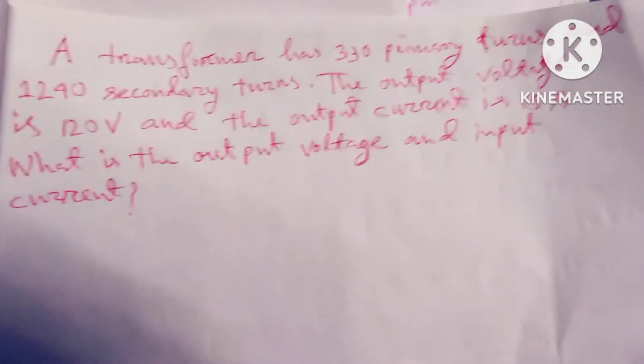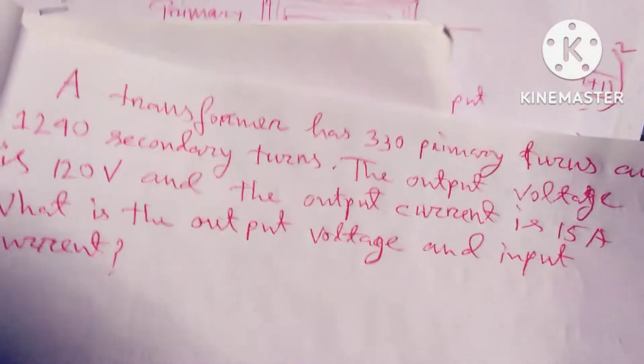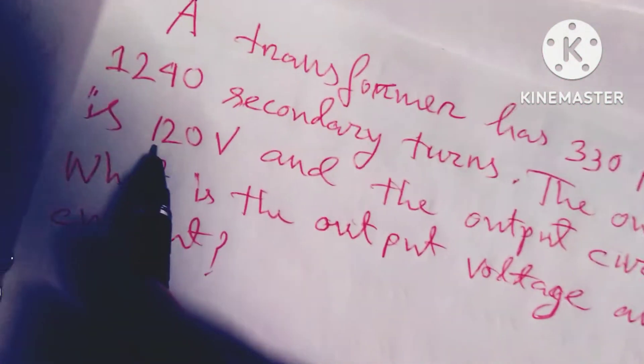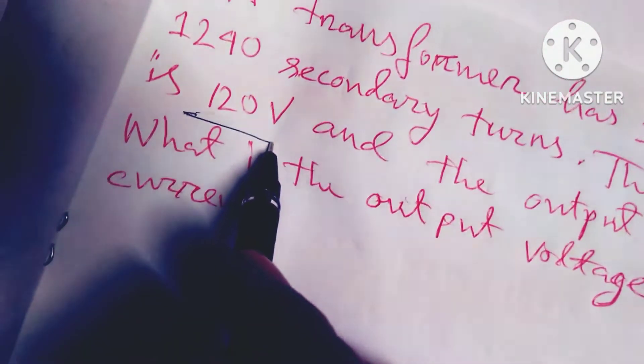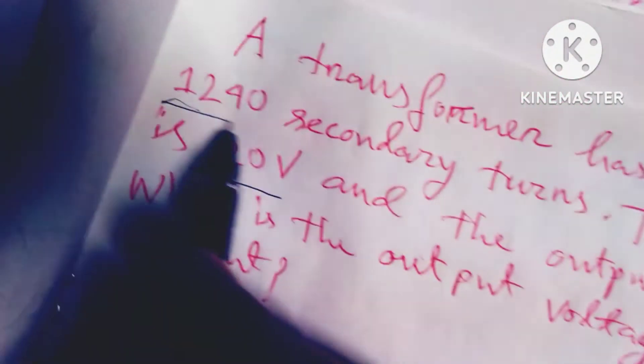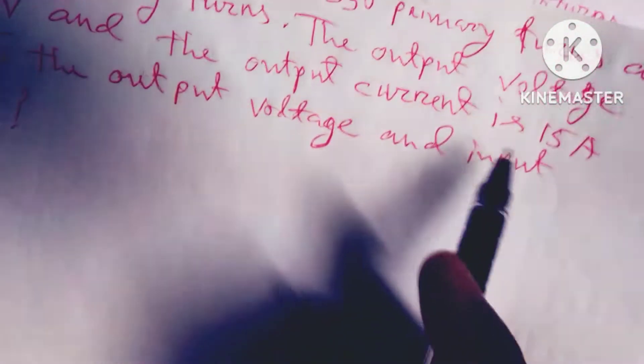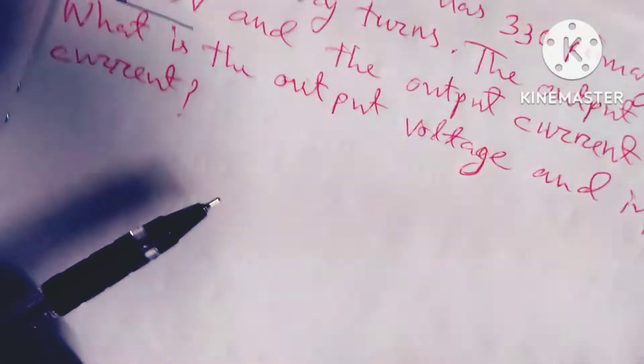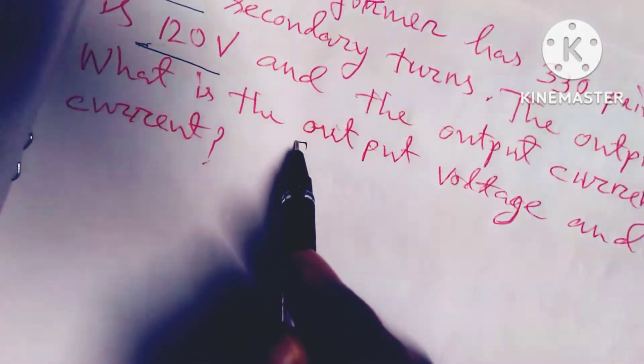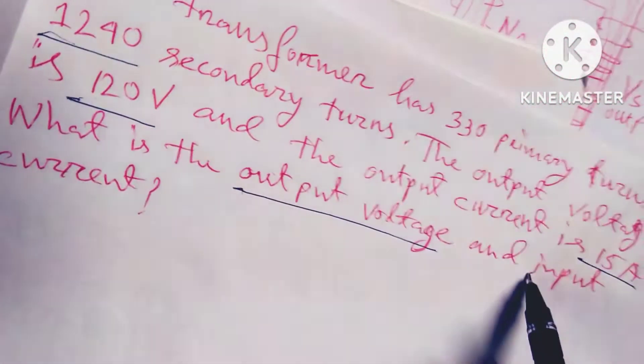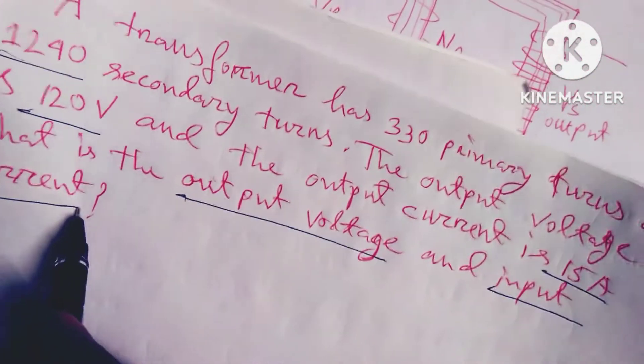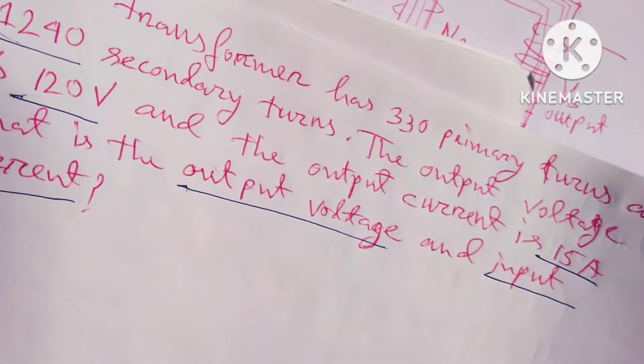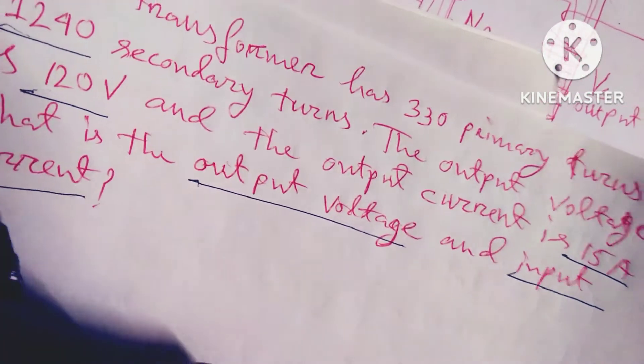So friends, you see the primary part is 120 volts and turns is 1240. And after that you can check 15 amperes, 15 is current. So I have to find out output voltage and input current. So how can I solve this problem? Friends, solution.